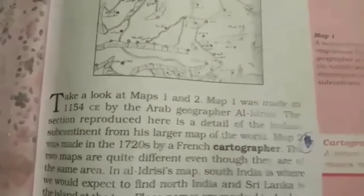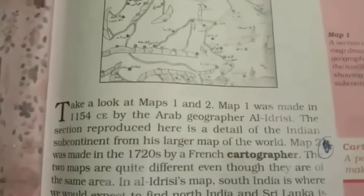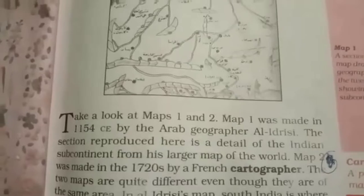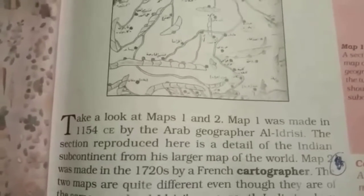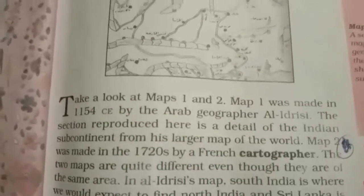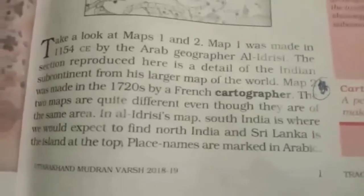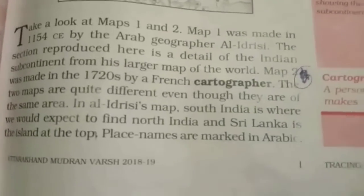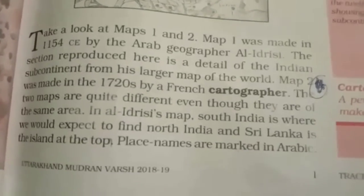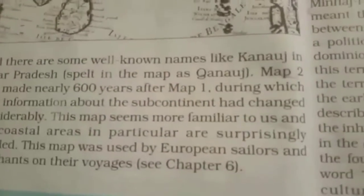Now we come to the first paragraph. Two maps are given — Map 1 and Map 2. The first map was made by Arab Geographer El Idrisi, and the second map was made by a French Cartographer in 1720. In El Idrisi's map of the Indian subcontinent, the southern part is located in the north, whereas the French Cartographer's map shows the Indian subcontinent differently.